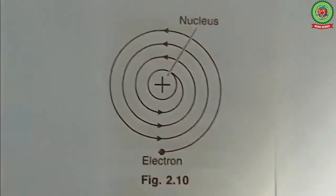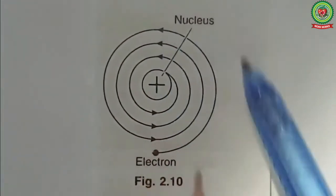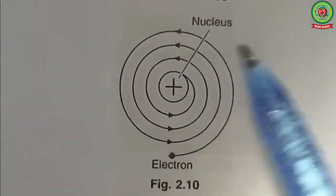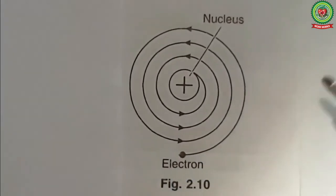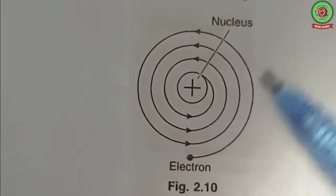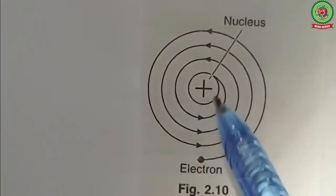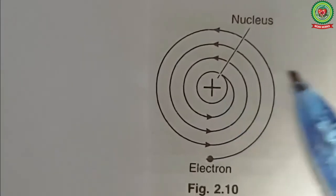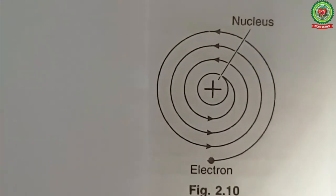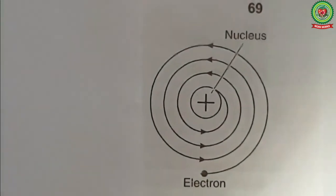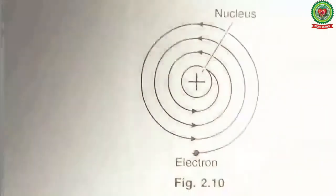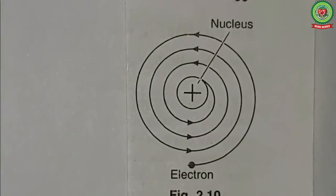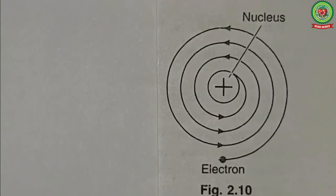According to classical mechanics, when a charged particle moves around the nucleus it radiates energy. As it revolves, it will continuously lose energy, and eventually it would collapse into the nucleus. But this does not happen in reality — atoms are stable. Rutherford was unable to explain why electrons do not fall into the nucleus, and due to this failure, his model was ultimately discarded.